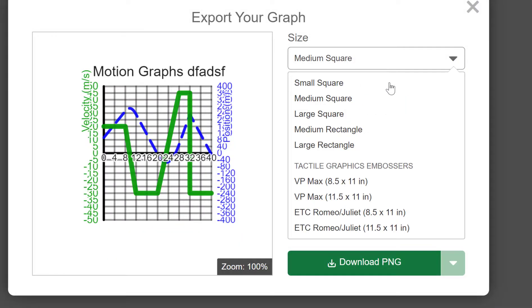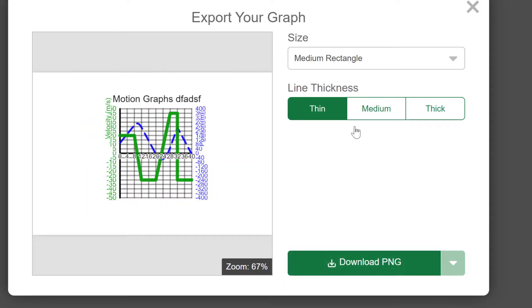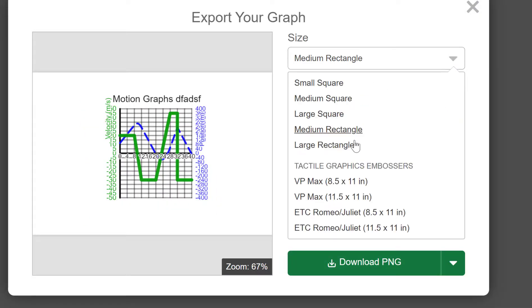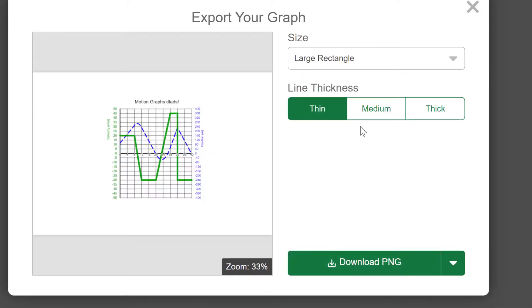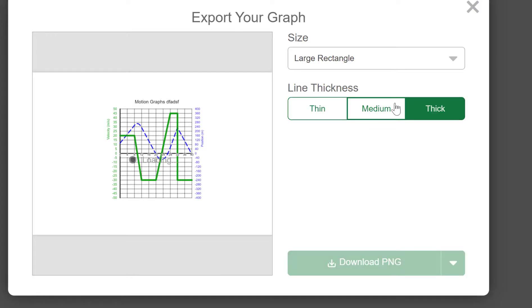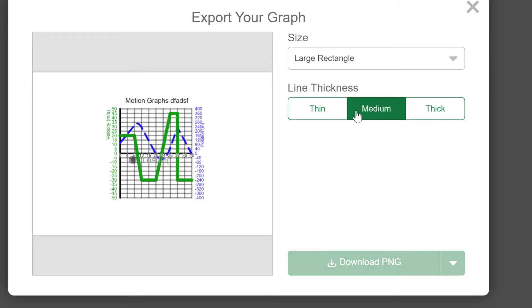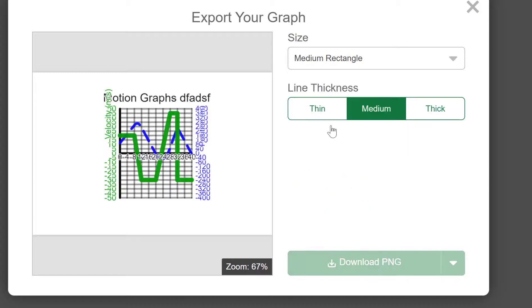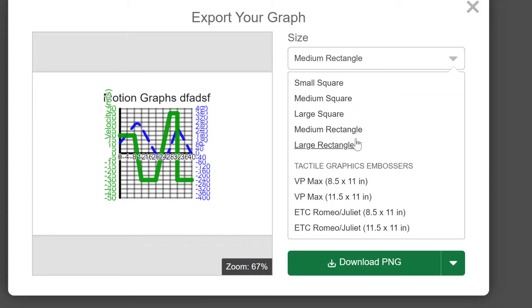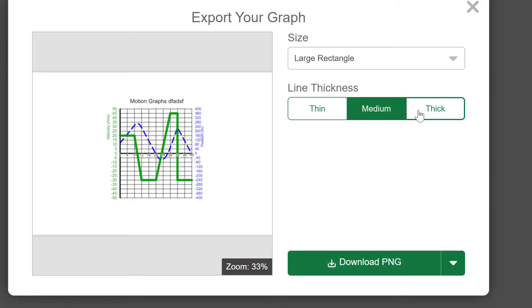And the one that usually I would like would be the medium rectangle or the large rectangle. And I would like to make that maybe medium. So I think medium rectangle is what I'd like. But when you go to large rectangle, or is it thick?